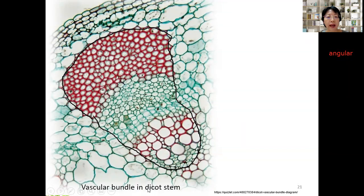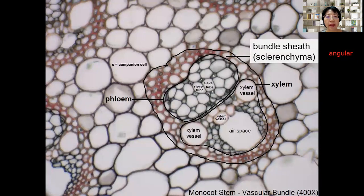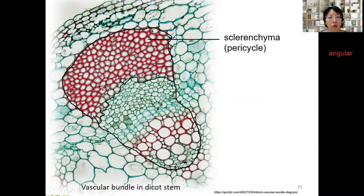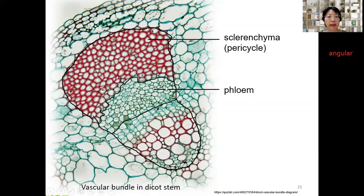This is another vascular bundle — this time in a dicot stem. Dicot and monocot stems are slightly different in the arrangement of xylem and phloem. The cells on top here all have lignified walls and are quite small versus this larger cell which also contains lignified wall. The small ones are sclerenchyma cells, so this layer is sclerenchyma tissue, also called pericycle. You need to draw the borderline to distinguish sclerenchyma from other tissue based on cell differences — look for the borderline between sclerenchyma and neighboring cells without lignified walls.